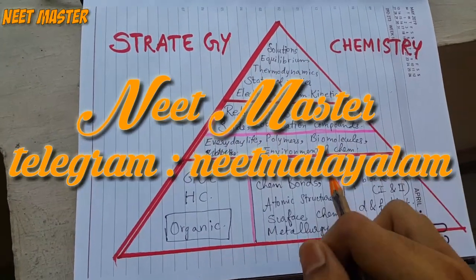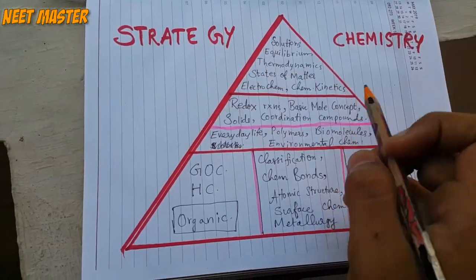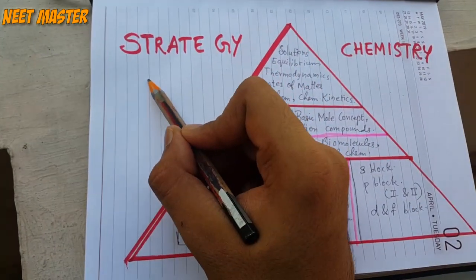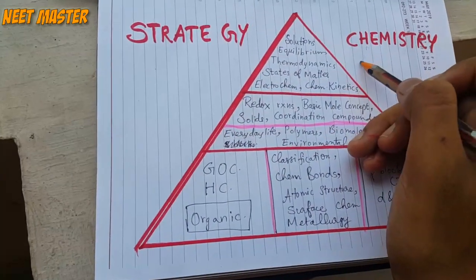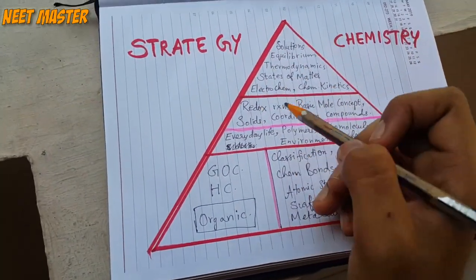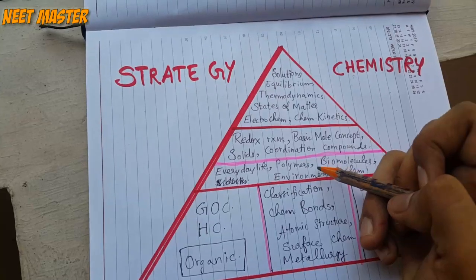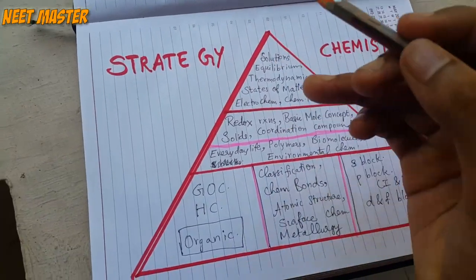Now we are going to go to chemistry and strategy. That is chemistry's bio-plan. We have to do this bio-plan. What are you doing about chemistry?